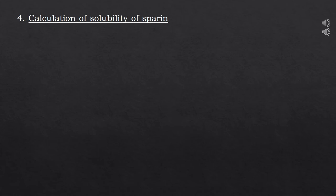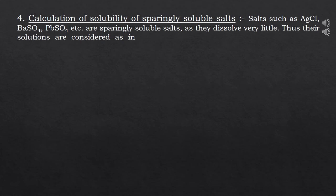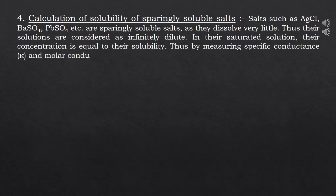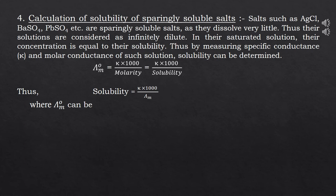The last application of Kohlrausch's law is the calculation of solubility of sparingly soluble salts. Salts such as silver chloride, barium sulphate, and lead sulphate are sparingly soluble, so their solutions are considered as infinitely dilute. In their saturated solution, concentration equals solubility. By measuring specific conductance κ, solubility can be determined: λM0 = (κ × 1000) / molarity = (κ × 1000) / solubility. Therefore, solubility = (κ × 1000) / λM0, where λM0 can be calculated by applying Kohlrausch's law.